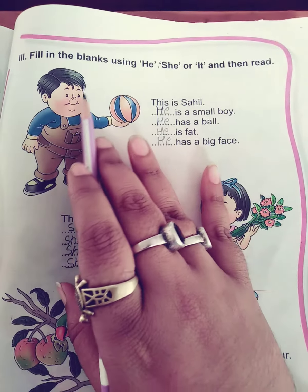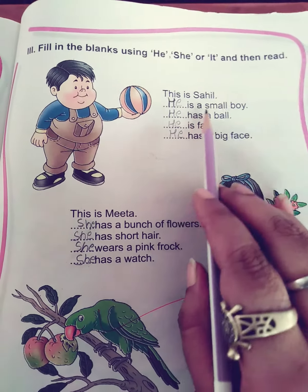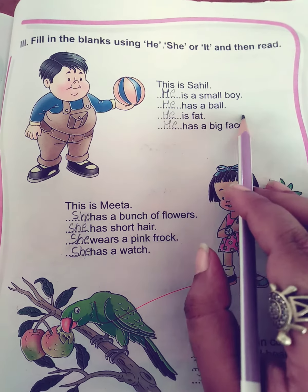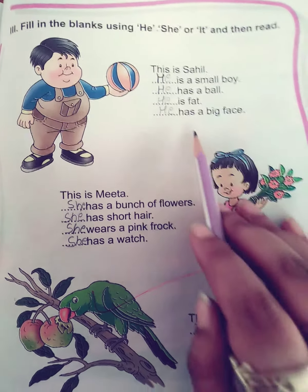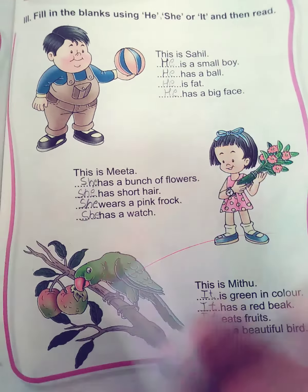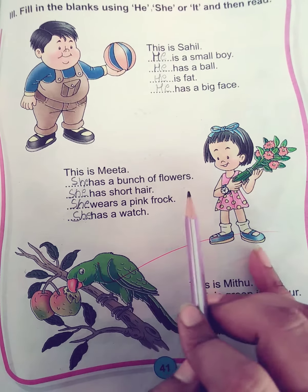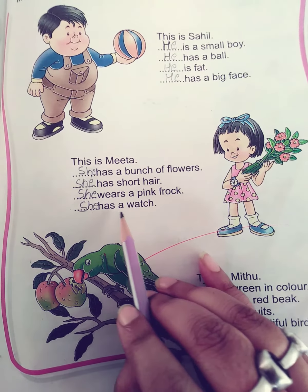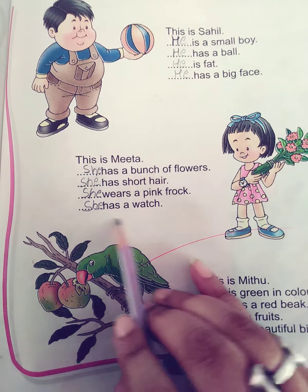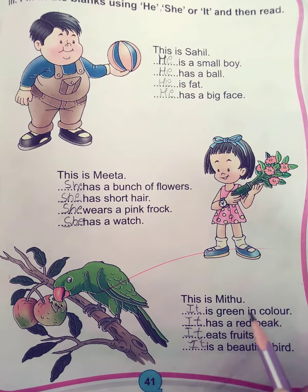Fill in the blanks using he, she, or it. This is Shahil — he is a small boy, he has a ball, he is fat, he has a big face. This is Meeta — she has a bunch of flowers, she has short hair, she wears a pink frock, she has a watch.